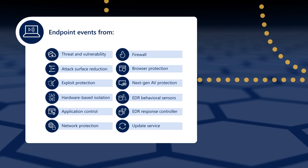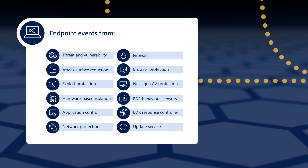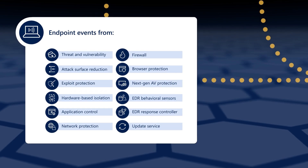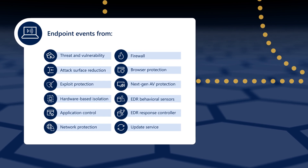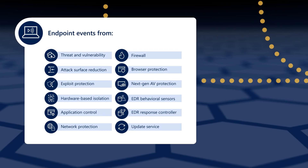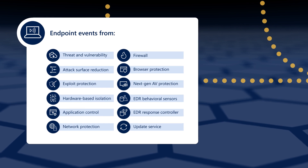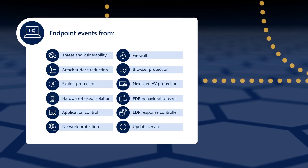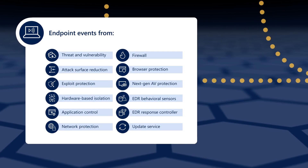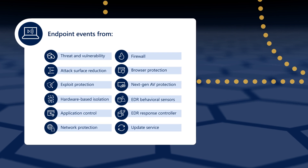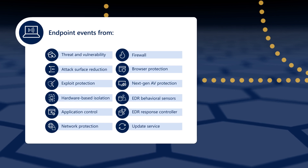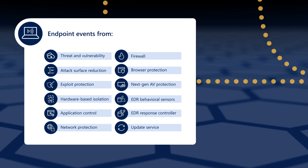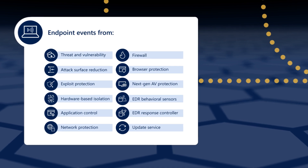All Microsoft Defender ATP security controls on the endpoint generate valuable security events. Those include threat and vulnerability management, next-generation protection, attack surface reduction, the EDR sensors, and many more, as well as the update service. However, security teams must turn on and configure some of these controls before they start generating events.